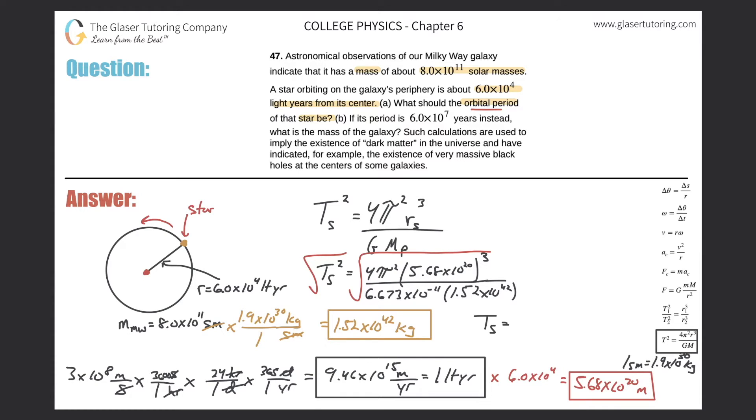Remember, in order to find just the period, I've got to get rid of the square, so I'll take the square root of both sides. Don't forget to include that exponent of 3 on the radius. Let's solve. I'll put T_S down here for the period of the satellite, which in this case is the star. So let's calculate: 4 times pi squared times 5.68 times 10 to the 20th cubed, divided by 6.673 times 10 to the negative 11 times 1.52 times 10 to the 42nd, and then take the square root of this thing. And we get a value of 8.45 times 10 to the 15.